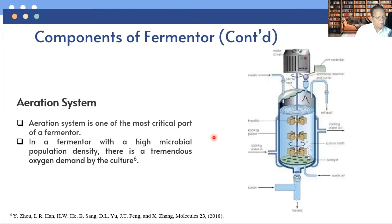Then let's move to aeration system. Aeration system is one of the most critical parts of a fermentor. In a fermentor with high microbial population density, there is tremendous oxygen demand of the culture. It is necessary that oxygen, being poorly soluble in water, be transferred rapidly to the growth medium.